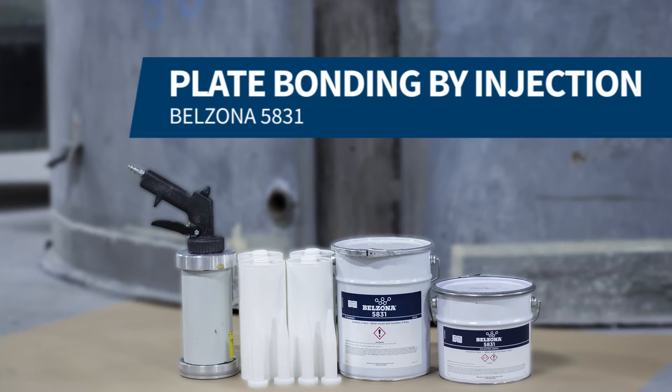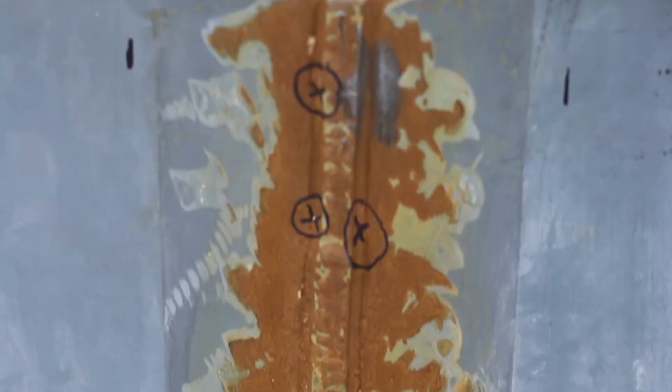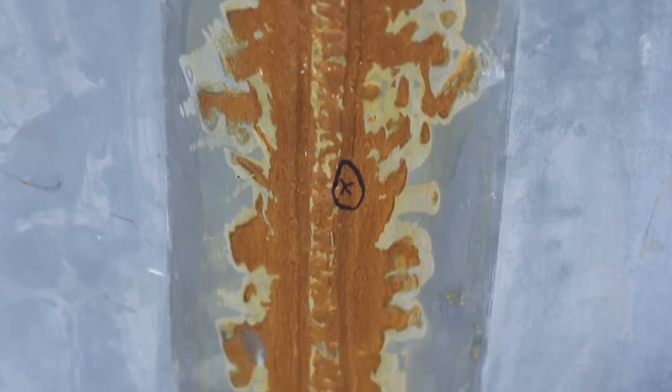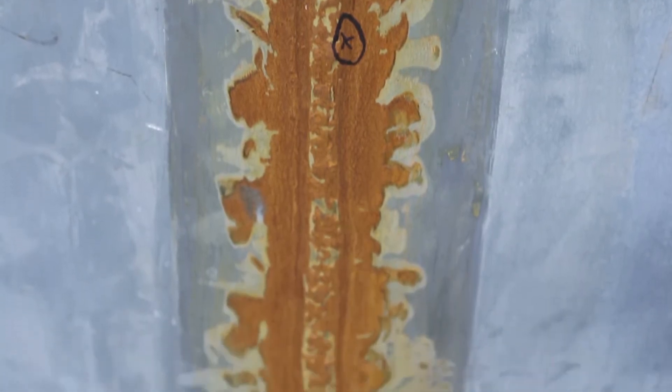In this video, we will be demonstrating how to repair a weld seam with plate bonding by injection. For this repair, we use Belzona 1161 to bond the plate and Belzona 5831 to repair the weld seam by injection.